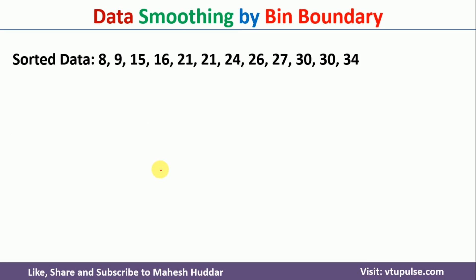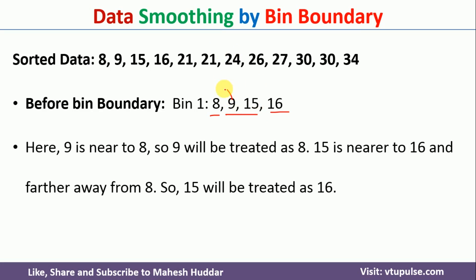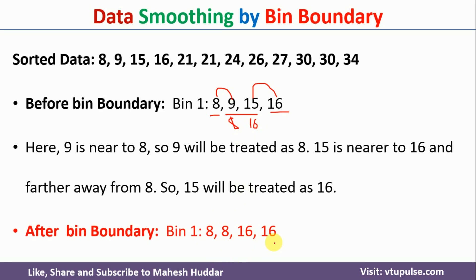Coming back to the last method, that is data smoothing by bin boundaries. In this technique, we again create bins using equal frequency. We calculate the bins and then apply the bin boundary. We keep the lower boundary and upper boundary as they are, but the middle values are assigned to the nearest boundary. For example, in bin 1 which contains 8, 9, 15, 16: 9 is nearest to 8, so 9 is considered as 8; 15 is nearer to 16, so it is considered as 16. After applying the bin boundary, you get 8, 8, 16, 16.